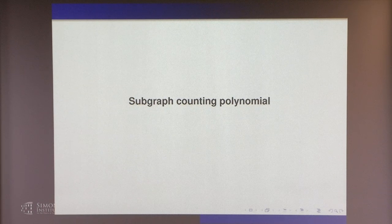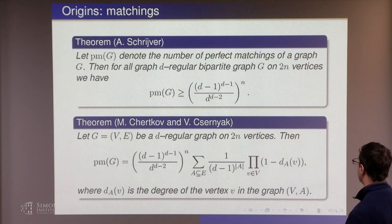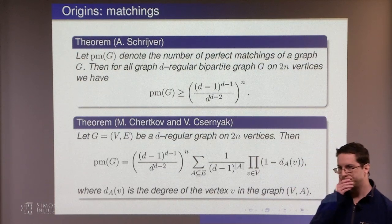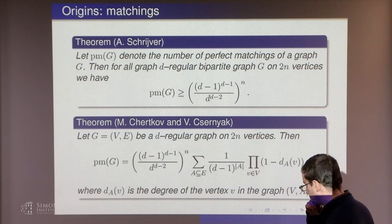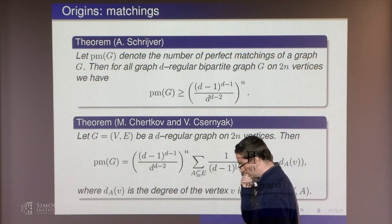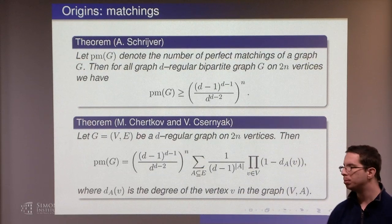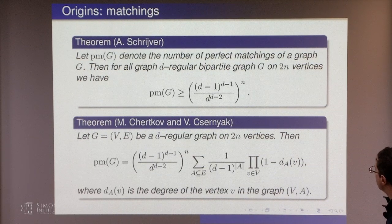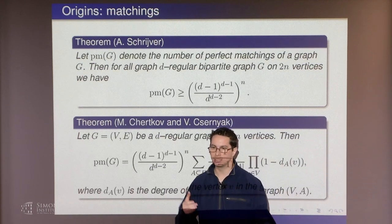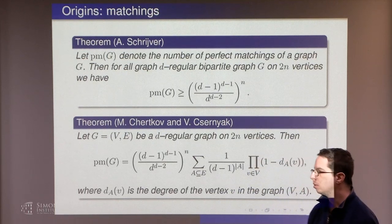One can use this gauge transformation technique to obtain various identities for the partition function of this normal factor graph without changing its value. I would like to apply this technique without fully explaining it. One question is whether these Ausi-type formulas allow one to get lower bounds. Unfortunately, I don't see any direct proof from this identity to the final bound, though that was my original motivation.